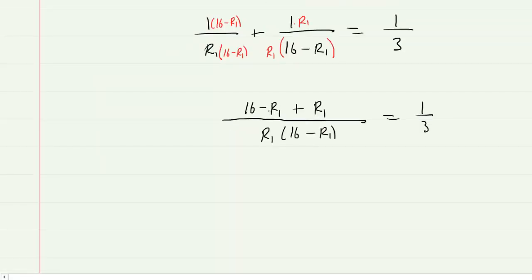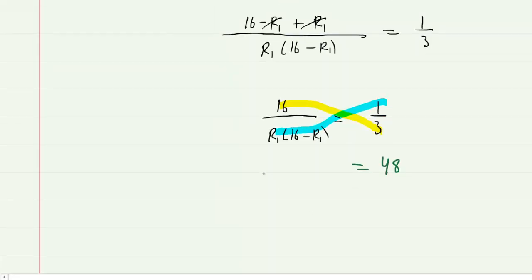Continuing on, we can see the minus R1 and the plus R1 cancel. So now we just have 16 left in the numerator. And perhaps the next best step is to cross multiply. So we'll multiply 16 times 3. That's going to give us 48. And then we'll multiply the other way. And the quantity R1 times 16 minus R1 is only being multiplied by 1. So it will remain unchanged.